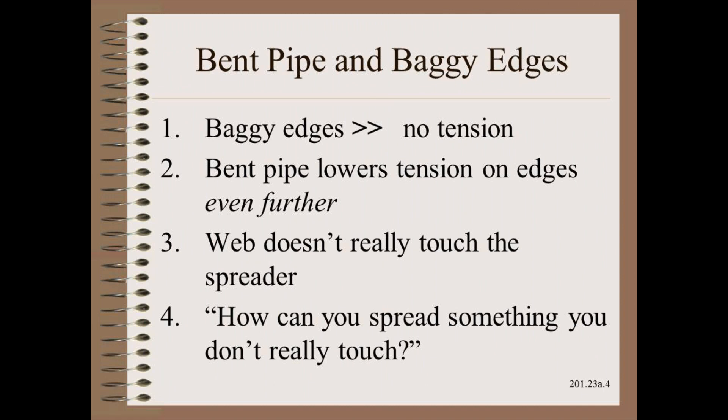In a similar fashion, we can ask whether it is plausible that one of the four variations of the bent pipe spreader might spread baggy edges. 1. Baggy edges again means no tension. 2. Bent pipe spreading geometry lowers the tension on the edges even further. 3. The web doesn't really even touch the spreader, but rather skips through on the top of ruffles. 4. How can you spread something you don't really even touch?